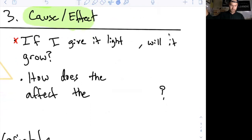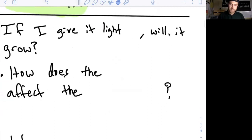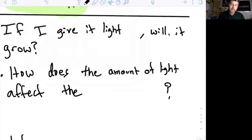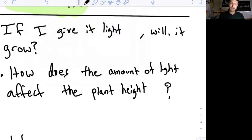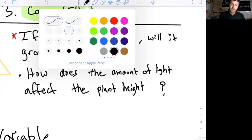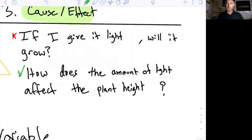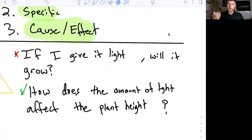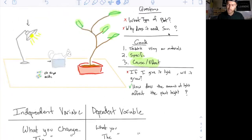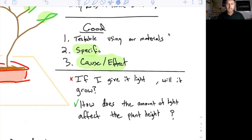Let's go from good to great. How about this question: how does the amount of light affect the plant height — how tall the plant grows? That's much more specific, and that's a perfect scientific question. It's specific, it's testable, we have all the materials we can use — we'll also need a meter stick to measure the plant height — and it's a cause-and-effect style question.